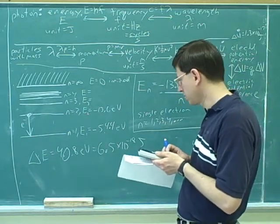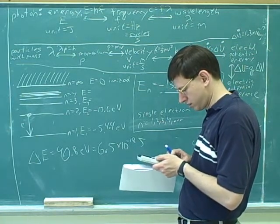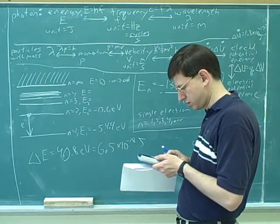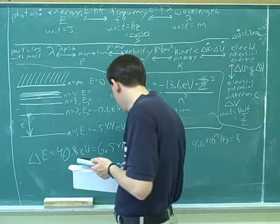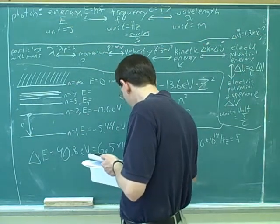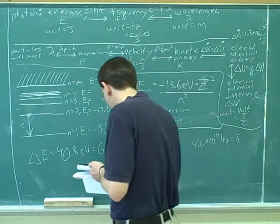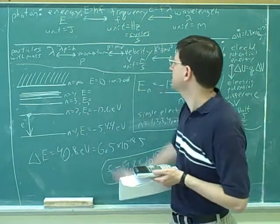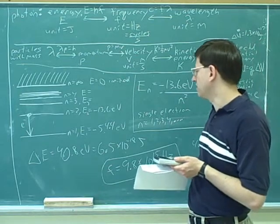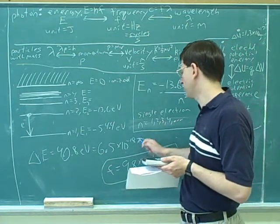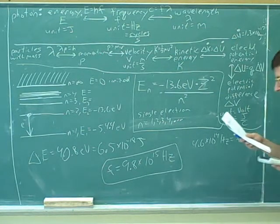So that divided by 6.6 times... 9.80 times 10 to the negative 18 hertz. Good. It's always good to put in a unit. Yep. So once you do this energy, you can use this formula. Good. And if you look at that number for h that you used, you can see that the units for h are in terms of joules. So that's why we have to convert from electron volts to joules over here. And then we're done. Yeah. Okay.